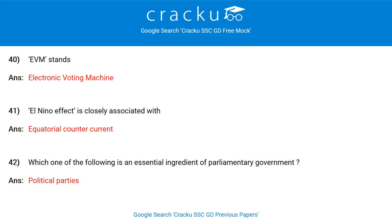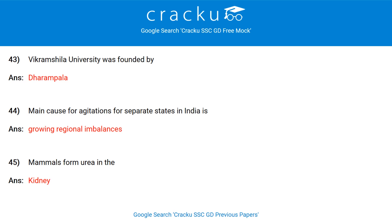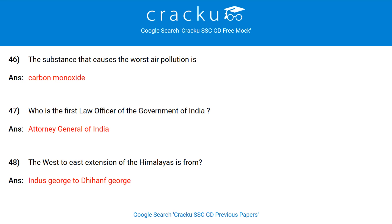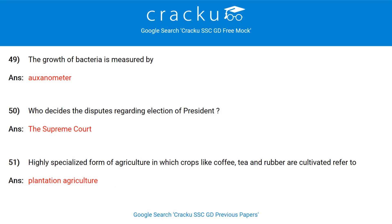El Niño effect is closely associated with equatorial counter current. Which is an essential ingredient of parliamentary government? Political parties. Vikramshila University was founded by Dharampala. The main cause for agitation for separate states in India is growing regional imbalances. Mammals form urea in the kidney. The substance that causes the worst air pollution is carbon monoxide. Who is the first law officer of the government of India?